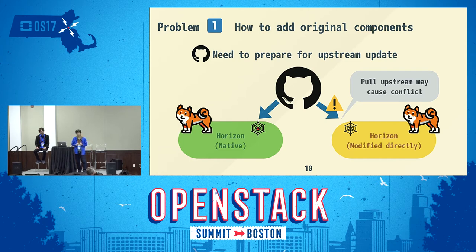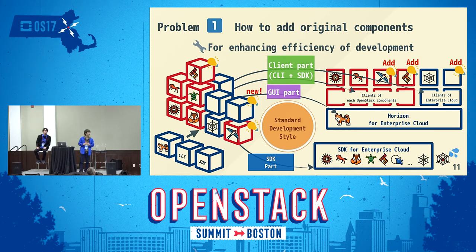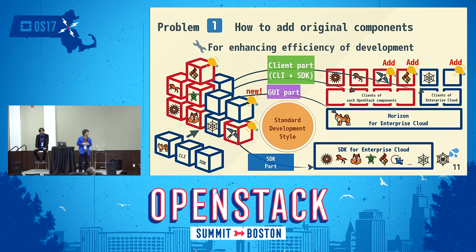The third point about this problem is we need to enhance the efficiency of development, because we need to handle many components regardless of whether they are OpenStack or original, and integrate all of them into three parts: CLI, GUI, and SDK. To learn how to handle these cases, we first studied the OpenStack standard development style and found we also need to develop these three parts in that OpenStack standard style.